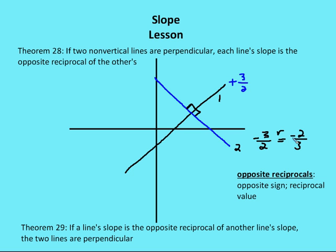So again, if two non-vertical lines are perpendicular, each line's slope is the opposite reciprocal of the other. And if a line's slope is the opposite reciprocal of another line's slope, then the two lines are perpendicular to each other.